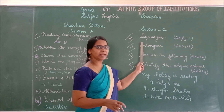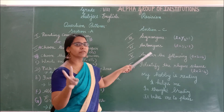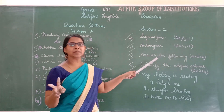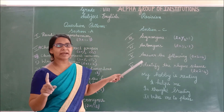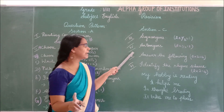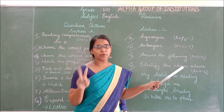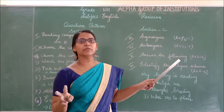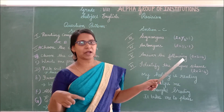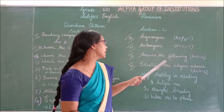Next, synonyms — they will give you 2 synonyms, each carrying half a mark, so overall one mark. And then, antonyms — they will give you 2 antonyms, each carrying half a mark, overall one mark.